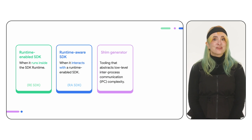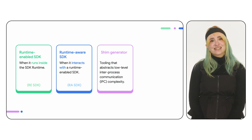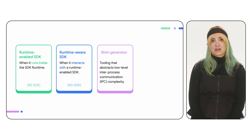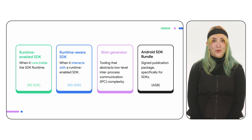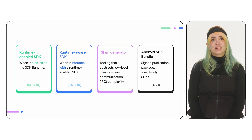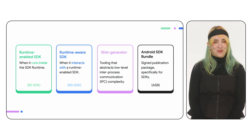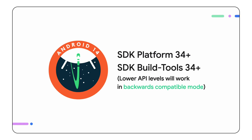Another important component is the set of shim generation tools, or just the shim. These Jetpack libraries will help you abstract low-level IPC complexity, as the SDK runtime platform APIs manage SDKs as binders. Finally, the Android SDK bundle, or ASB, is the publication format that makes distributing SDKs in a standalone manner possible. As the SDK runtime is available starting Android 14, you'll need at least API level 34.